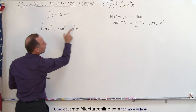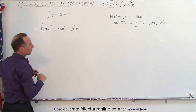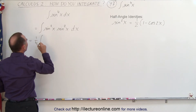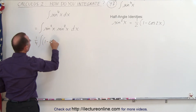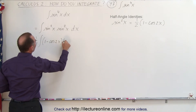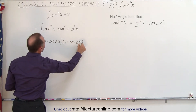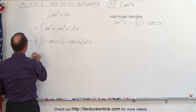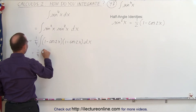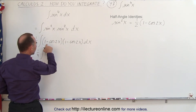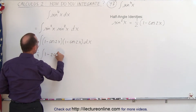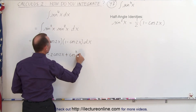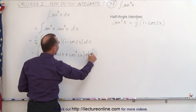Each one of these will be replaced by 1 half times 1 minus the cosine of 2x, which means that in the front we end up with 1 quarter times the integral of (1 minus the cosine of 2x) times (1 minus the cosine of 2x) dx. Now we're going to multiply that together.